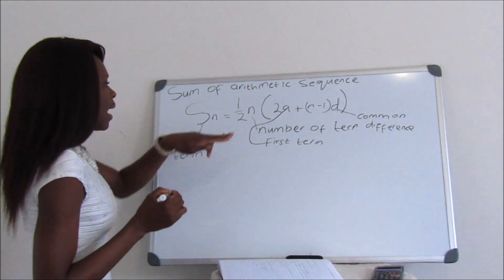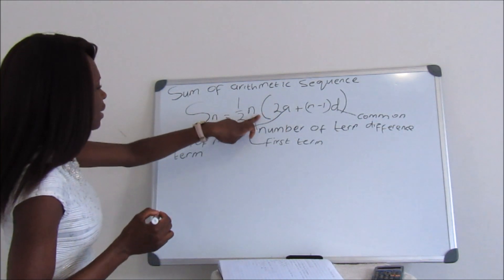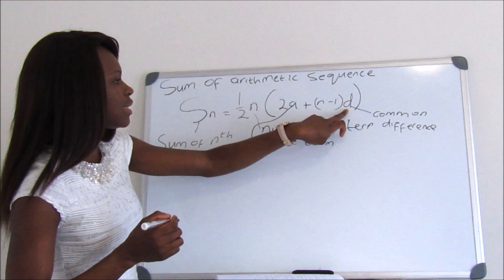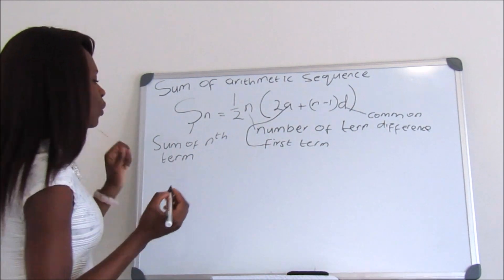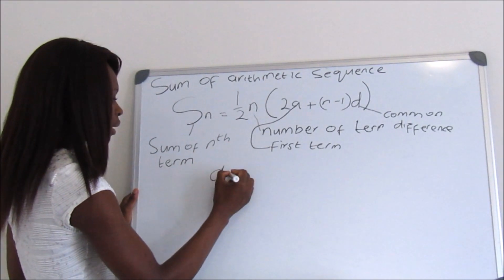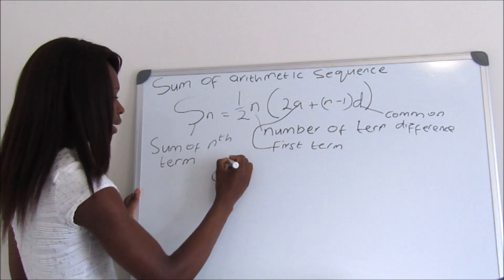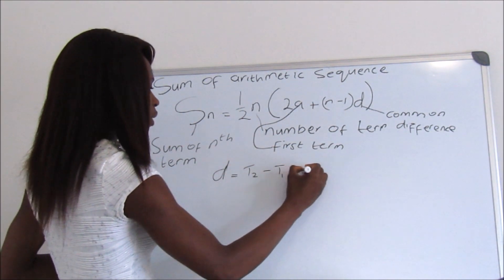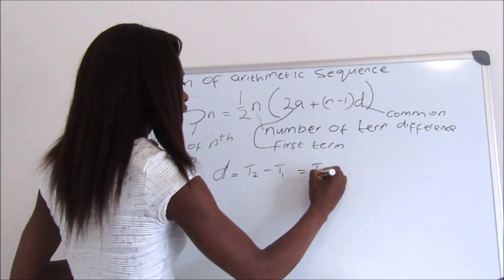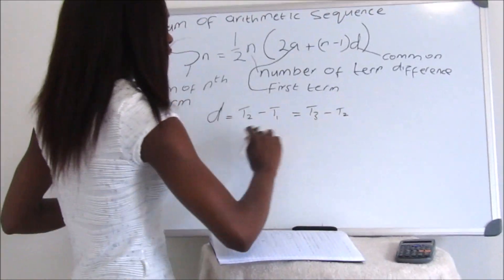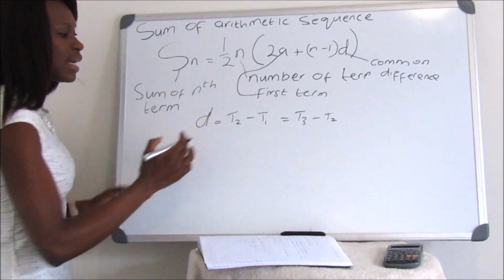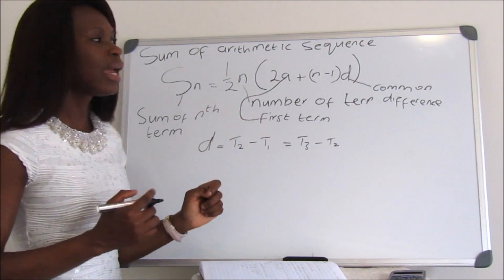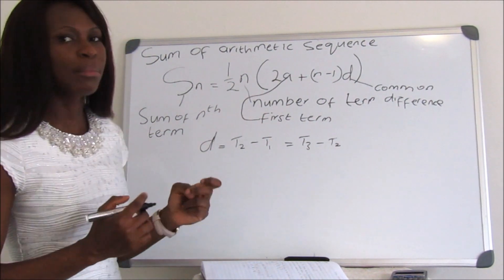A quick recap: a is our first term, n is the number of terms, Sn is the sum of the nth term, and d is the common difference. To get d, d = t2 − t1, which should also equal t3 − t2. If you get different answers from those two, then the sequence is not an arithmetic sequence.